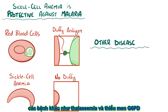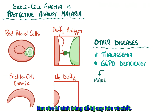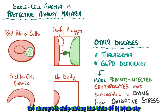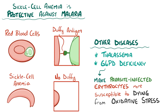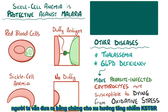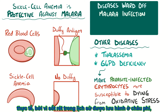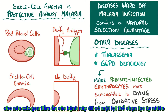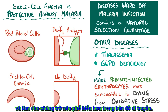Other diseases, like thalassemia and G6PD deficiency, make the parasite-infected erythrocyte more susceptible to dying from oxidative stress. So, despite the obvious downside to having any of these diseases, they do offer an upside when it comes to warding off a malaria infection. In fact, because malaria has historically circulated in Africa, the genes underlying these diseases are thought to have conferred a natural selection advantage and therefore become more common in the genetic pool.